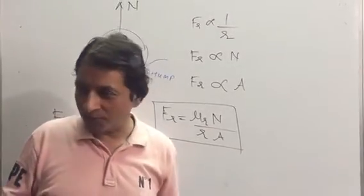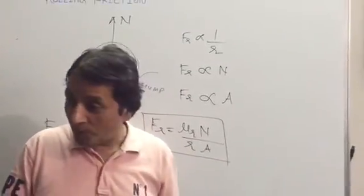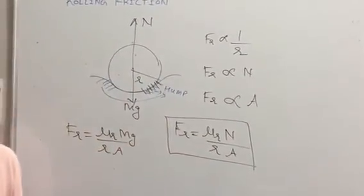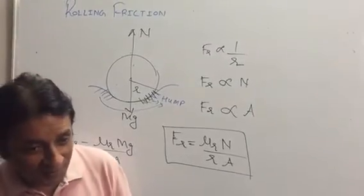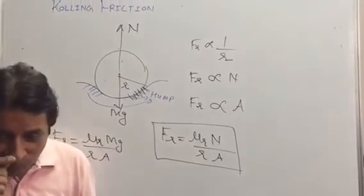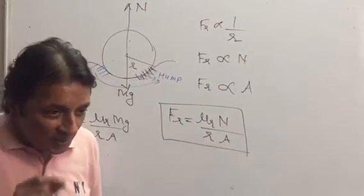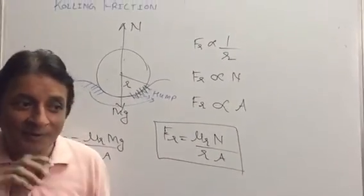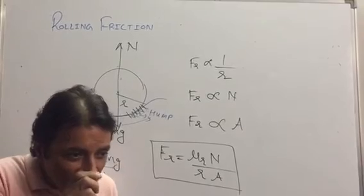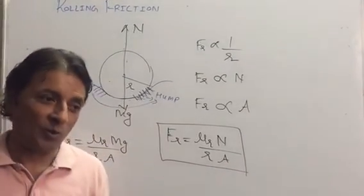When you play the carom board, you sprinkle powder on the carom board. The granules are spherical so that the sliding friction will convert to rolling friction. The striker rolls like small balls, and the skaters roll.